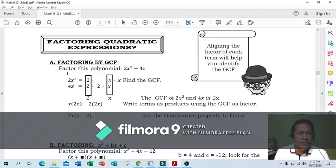If you multiply these three, you get 2x squared. For 4x, it's 2 times 2 times x. Multiply these three and you get 4x. What's common between them? The boxed ones: 2 and x. This is the GCF of 2x squared and 4x.